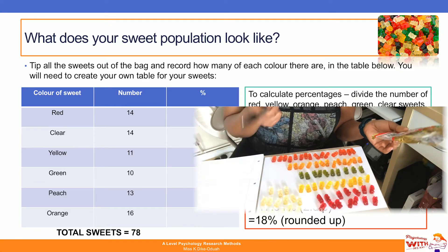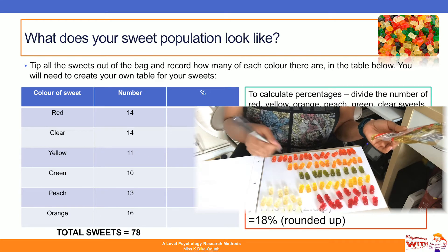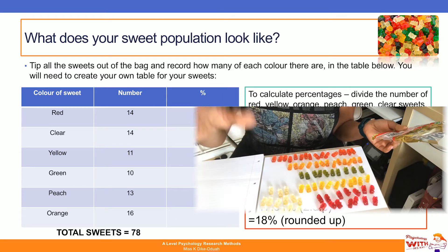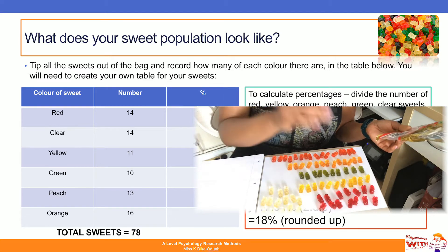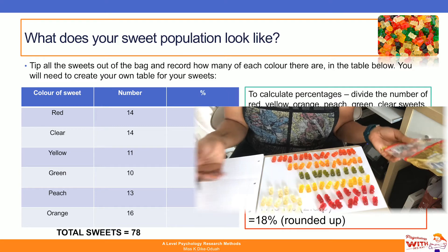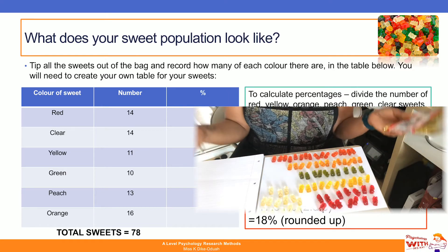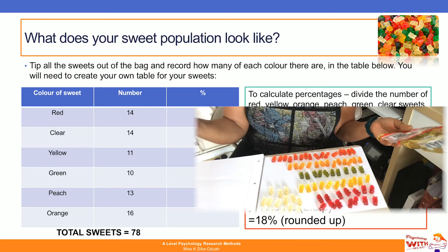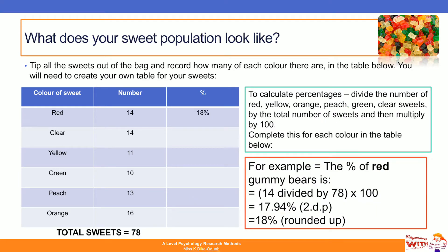Once you've done that, it's important that you calculate the proportion. You're going to provide me with the percentage of gummy bears — or Skittles or Smarties — that are red, blue, green, and so on. The way to do that is simply get the number that are red, divided by the total population, and multiply by 100 to get your percentage. Have a go at doing that.